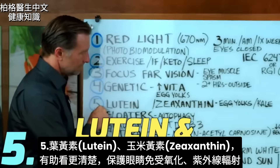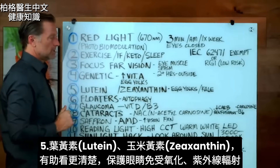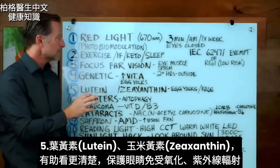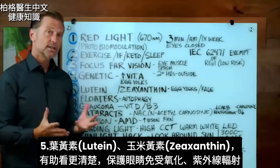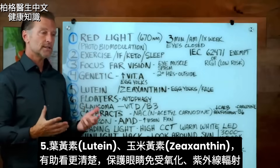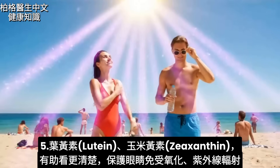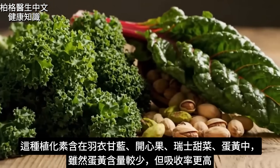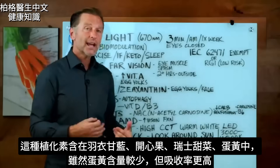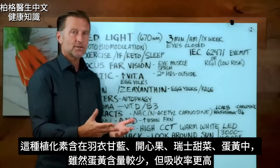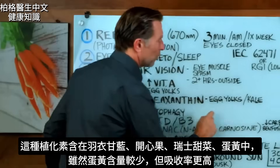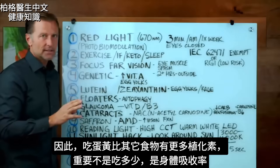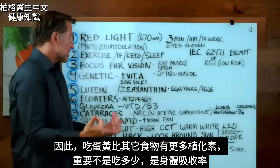Number five: lutein and zeaxanthin. Both of these can help you see better, protect the eye against oxidation, and protect against too much UV radiation. These two phytonutrients are found in kale, pistachios, and Swiss chard — actually more of it is in kale, Swiss chard, and pistachios than in egg yolk. But in egg yolk, it's way more bioavailable, so you're actually going to absorb more from egg yolks. It's not just the total amounts — it's how much you can absorb.